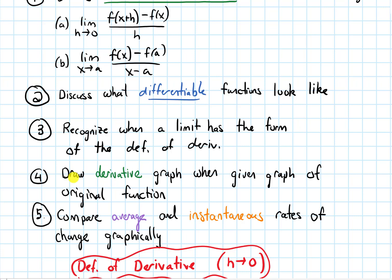We'll do an example where we draw a derivative graph when given the graph of an original function, and we'll discuss how we can compare average and instantaneous rates of change graphically.